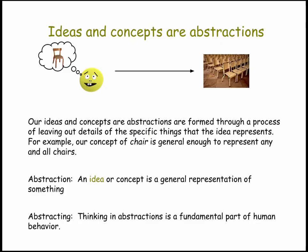An idea or a concept is a great example of an abstraction. These are formed through a mental process that happens pretty much automatically as we learn about our world from infancy through old age. The concept encapsulates only those details that are necessary for making it a useful concept. For example, the concept of a chair doesn't include any specifics about what it's made of, how big it is, or what color it is.